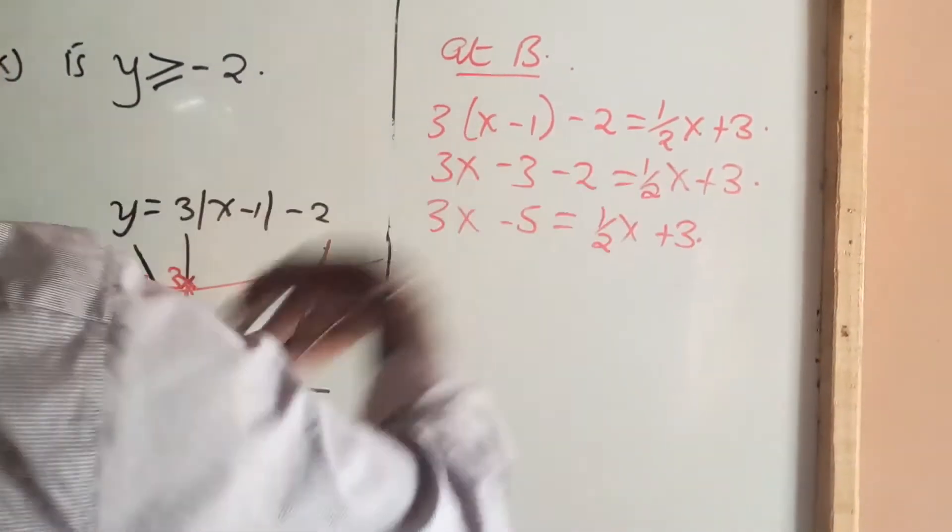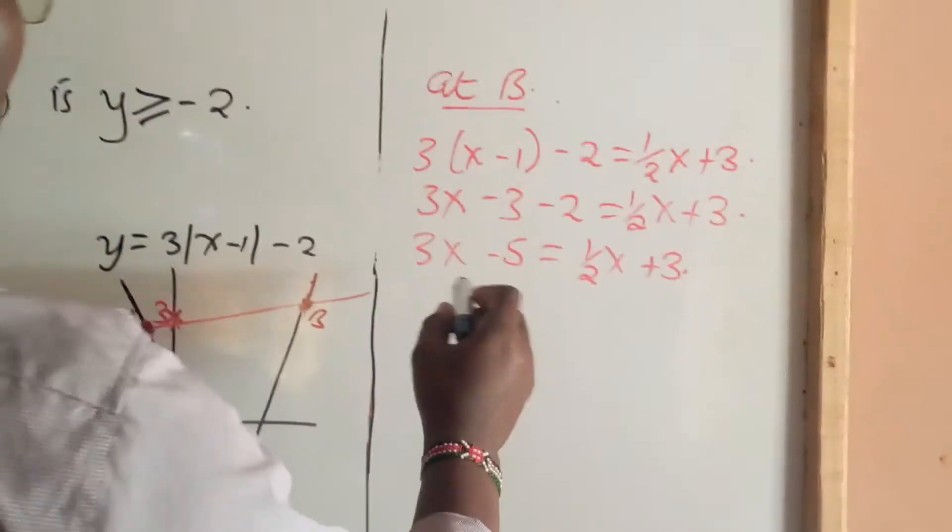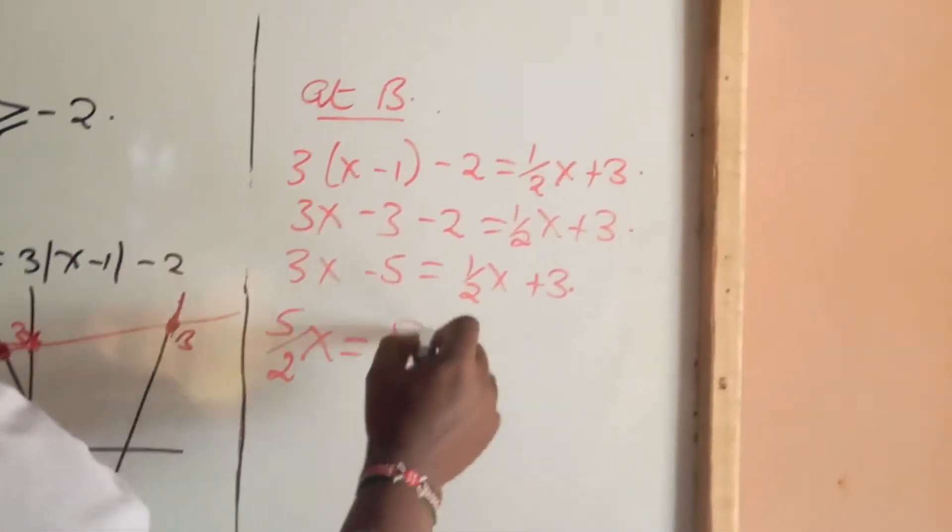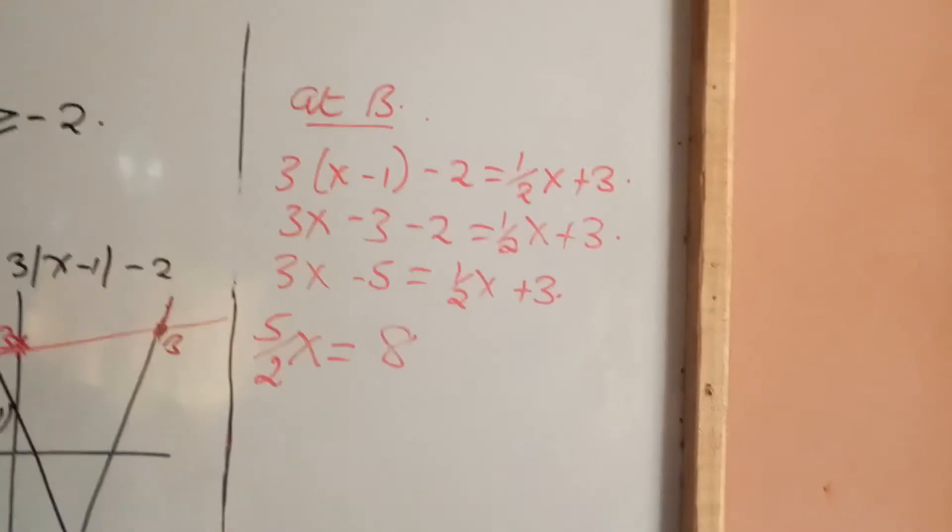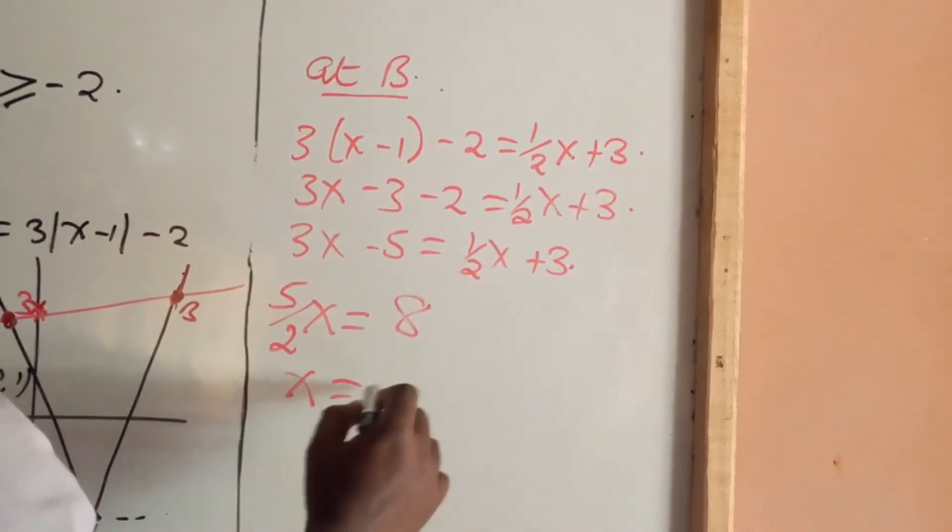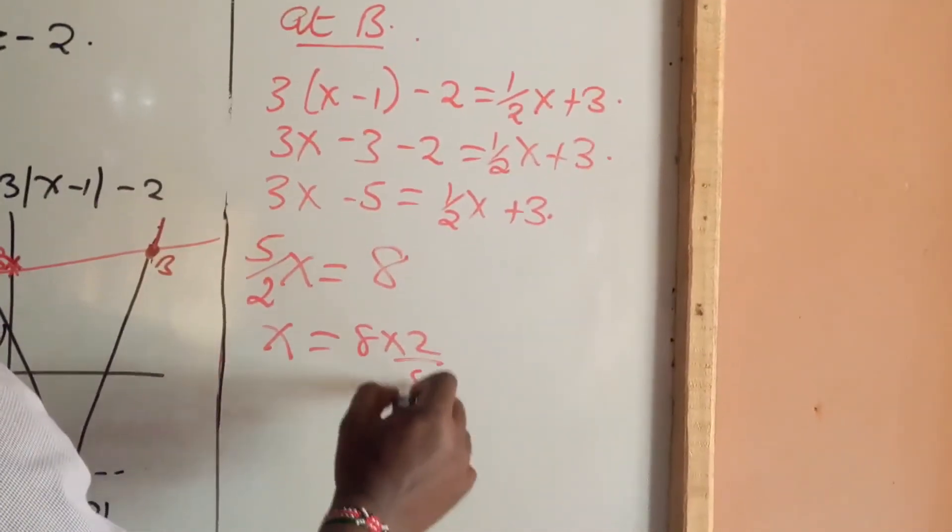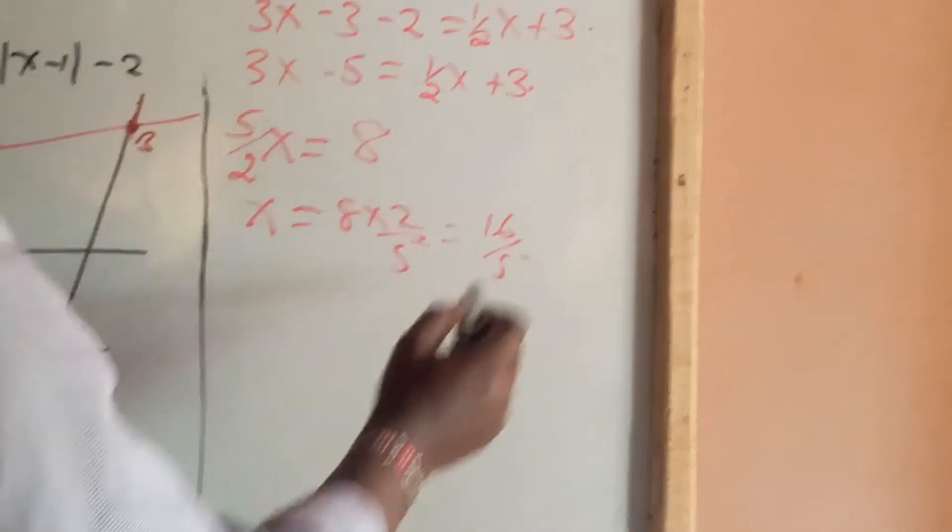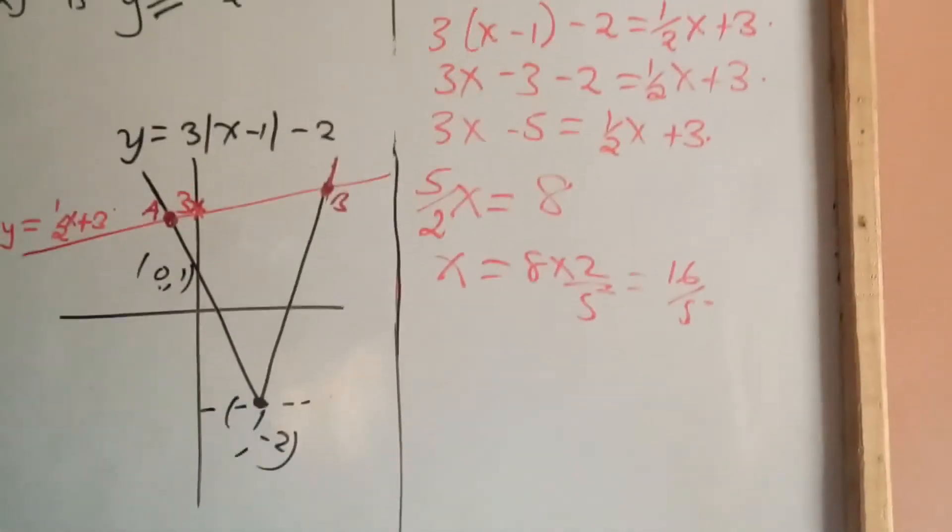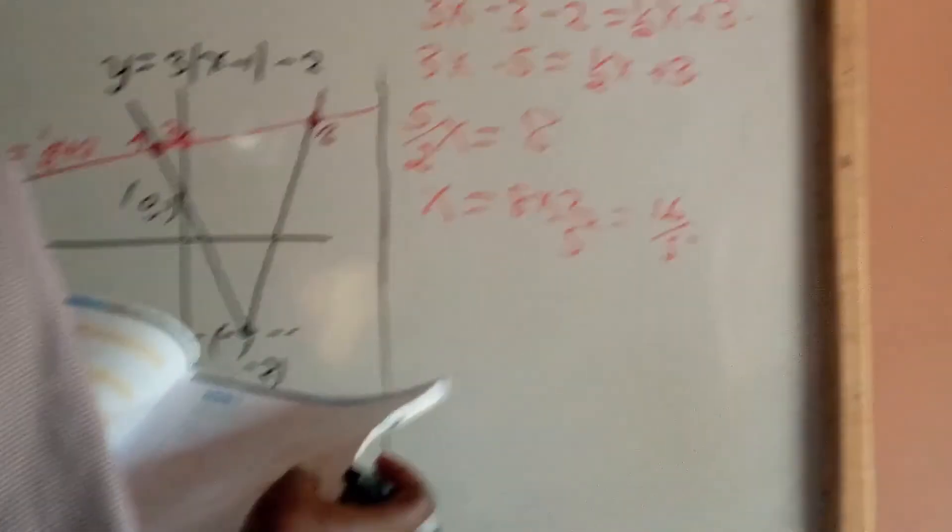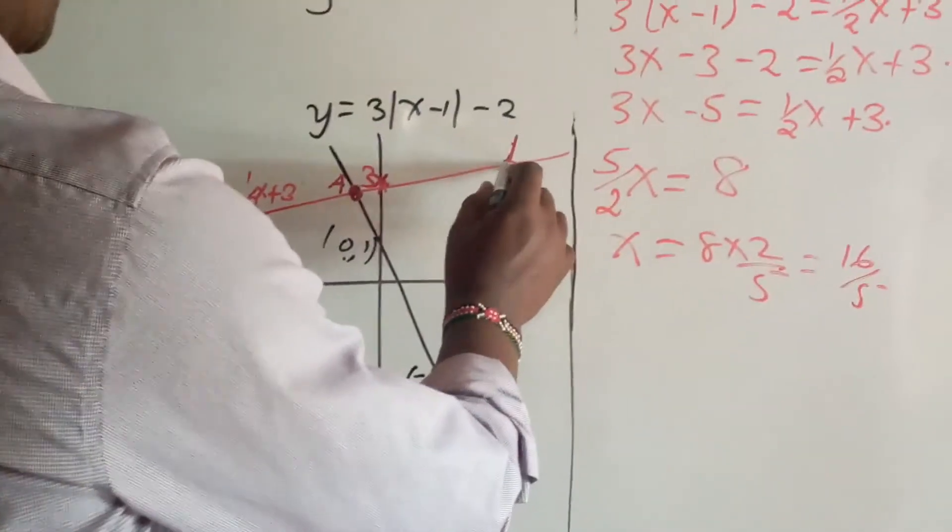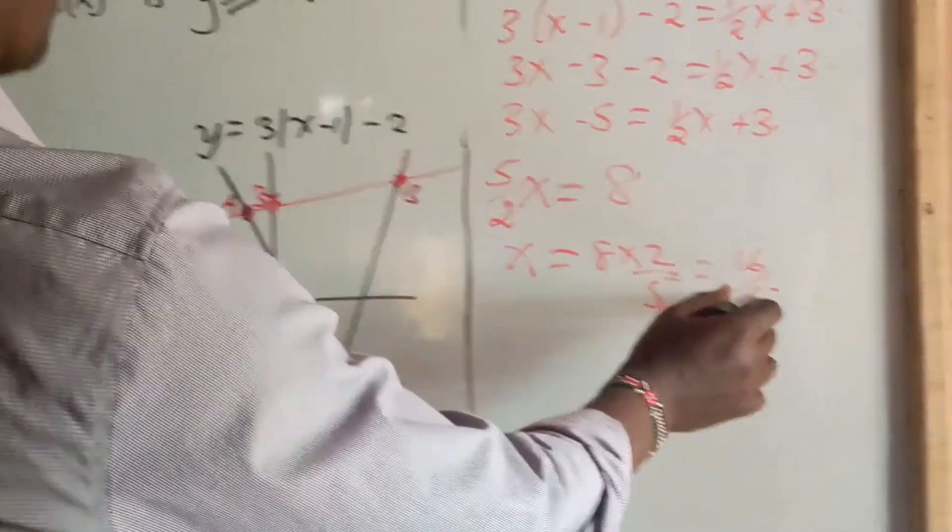If you bring (1/2)x across, then you are going to have (5/2)x = 8 because of 3 plus 5. So, x = 8 × 2/5 which is 16/5. And that gives us the other possible value of x. At this particular point, x is 16/5.